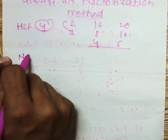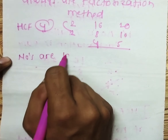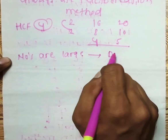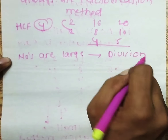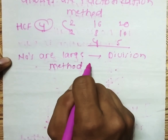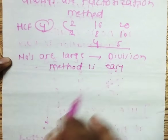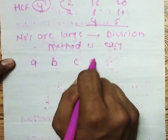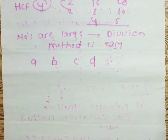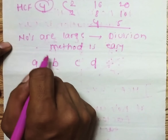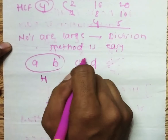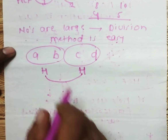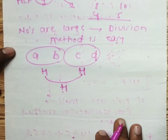But if numbers are large, the division method is easy. If there are four numbers A, B, C, D and someone asks for their HCF, first calculate the HCF of two numbers, then calculate the HCF of the next two, and then combine those results to get the HCF of all four numbers.